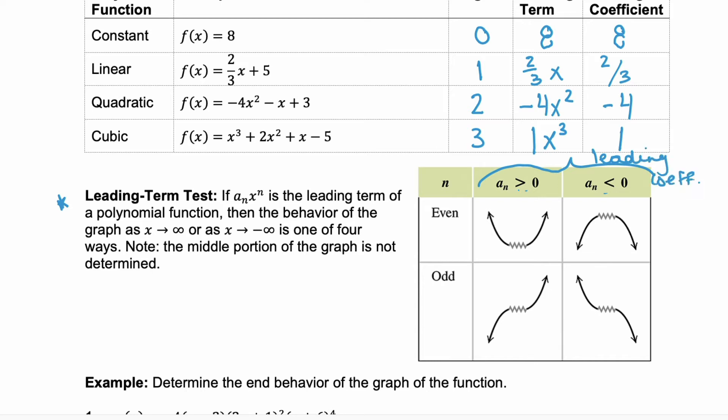So, if we have a positive leading coefficient, we'll look in this first column. If we have a negative leading coefficient, we look in the last column. And then, to determine which cell, we want to know about n. n is our degree.